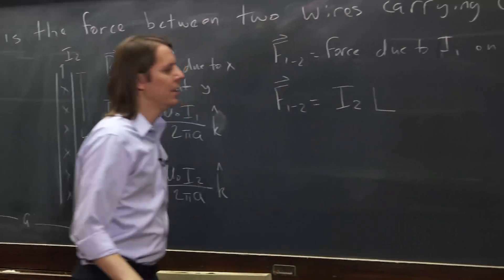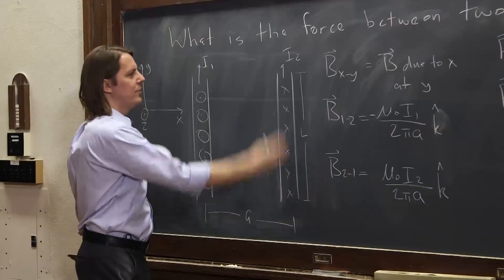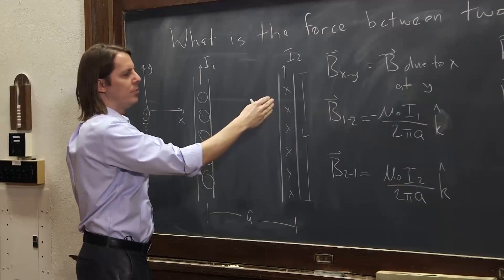So we can call that L or L2. Let's call it L. It's the same L. So it's F, L, and L in this case is the direction of the current, so it points up, and then L is going to be crossed with B.